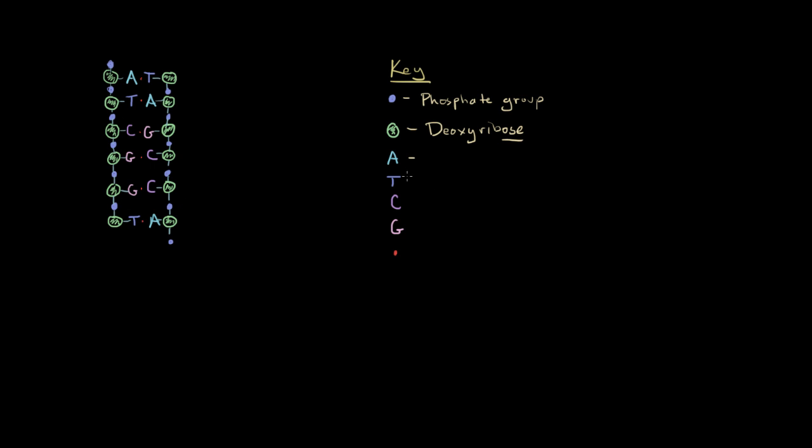They go by the names adenine, thymine, cytosine, and guanine. I'm going to write those in. So these four chemicals make up the bases or rungs of the ladder.